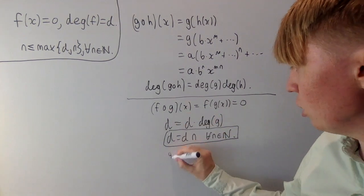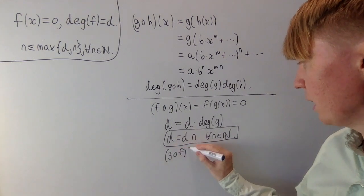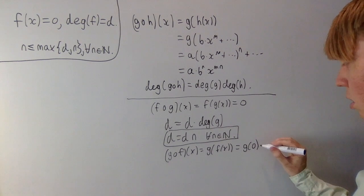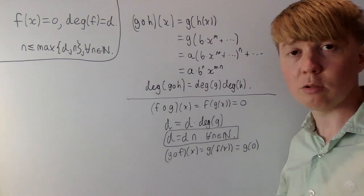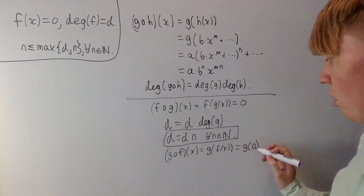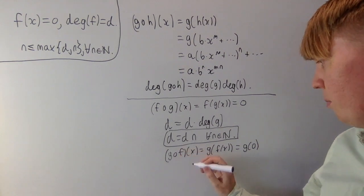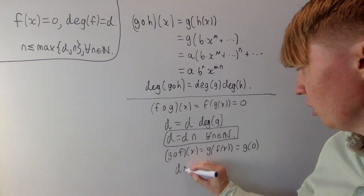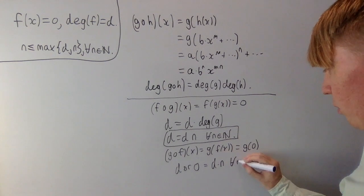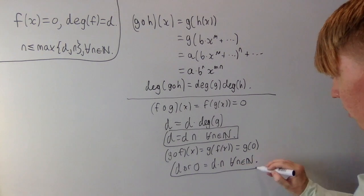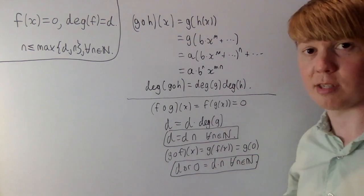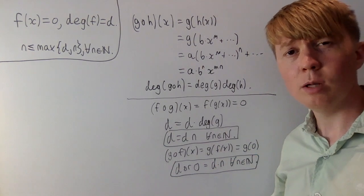Let's also look at g composed with f the other way round. This is g of f of x, which is just g of zero, which is a constant. So the degree of this is generally going to be zero, because the degree of a constant is zero. Or if g of zero happens to be zero, the degree is going to be d, which we don't know. So the degree of the composition is d or zero, and this has to equal d times n for all n in the natural numbers. So we now have that d equals d times n for all n, and also that zero equals d times n for all n — all still consistent with d being equal to zero.